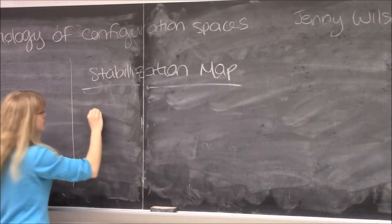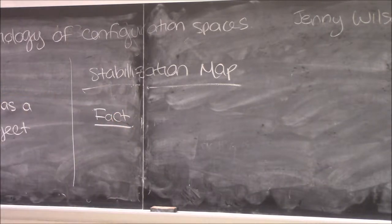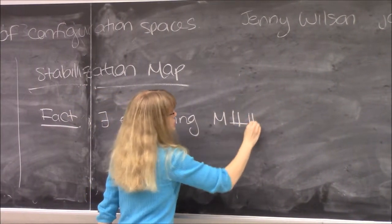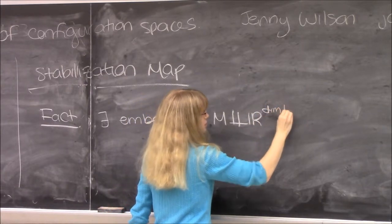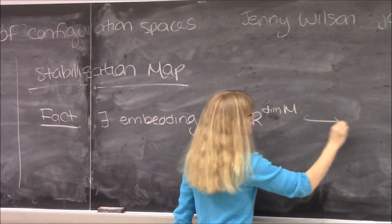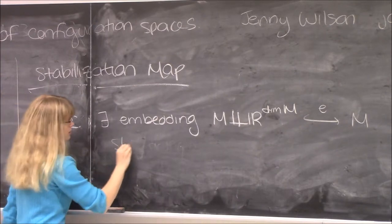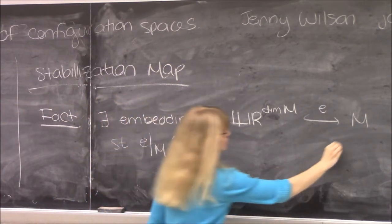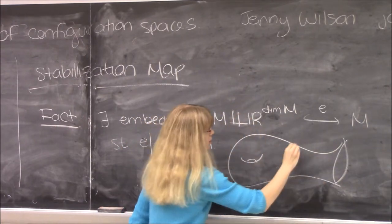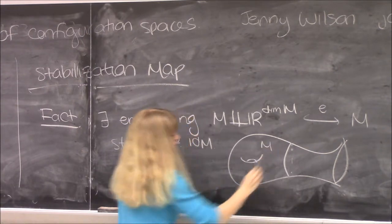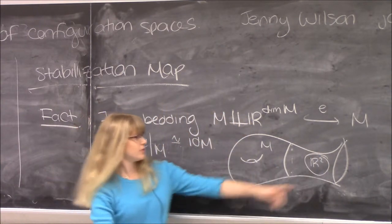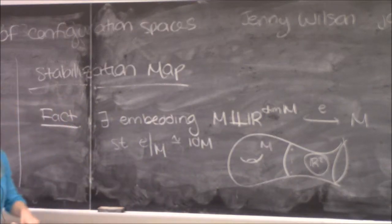In order to define this extra structure, here's a fact that comes from our assumption that M is an open manifold: it turns out that we can define an embedding from the disjoint union of M and Euclidean space into M, such that when we restrict this embedding to M, the result is isotopic to the identity on M. So since M is open, we can define such an embedding.